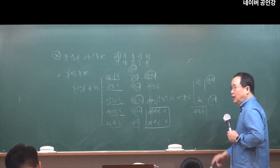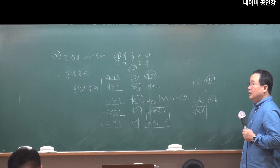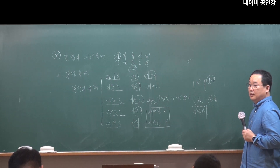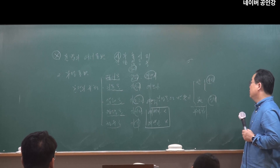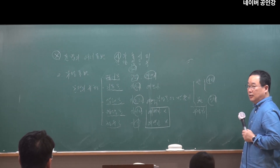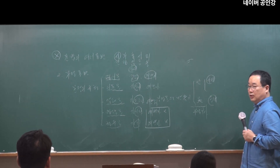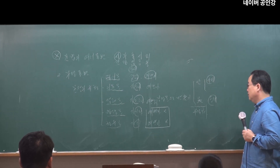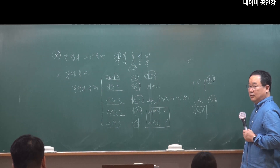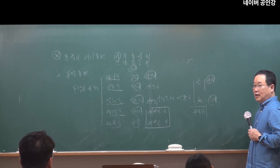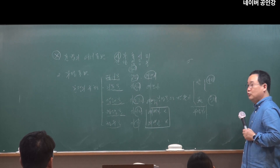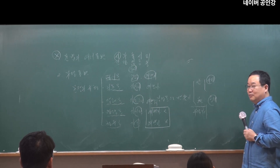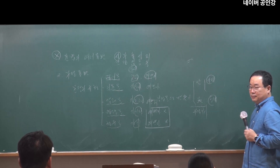'안'을 사용한 부정문을 살펴보겠습니다. '안 간다', '안 예쁘다', '안 예쁘다 또는 예쁘지 않다'는 말이 됩니다. '안 가느냐', '안 예쁘냐', '예쁘지 않냐'도 됩니다. '안 가는구나'도 됩니다. 그런데 '안 가거라', '가지 않아라'는 말이 안 되고, '안 가자'도 안 됩니다.